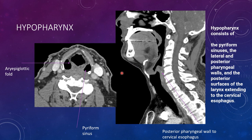The hypopharynx is a less specific area. It's this aryepiglottic fold — when it comes to the back, it forms this space called the piriform sinus. So this would be a hypopharyngeal mass if it originates here. It consists of these piriform sinuses, the lateral and posterior pharyngeal walls, and then extends posterior to the larynx until you get to the cervical esophagus. All this space back here is considered the hypopharynx.